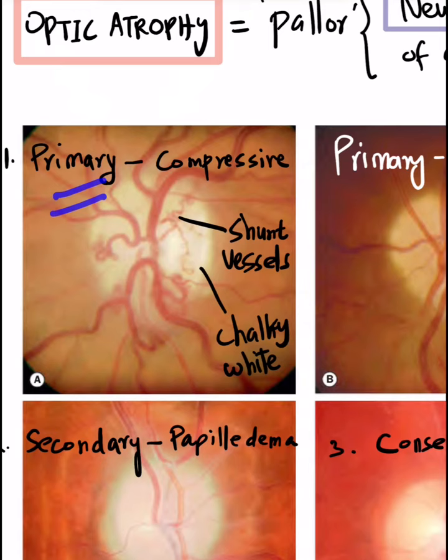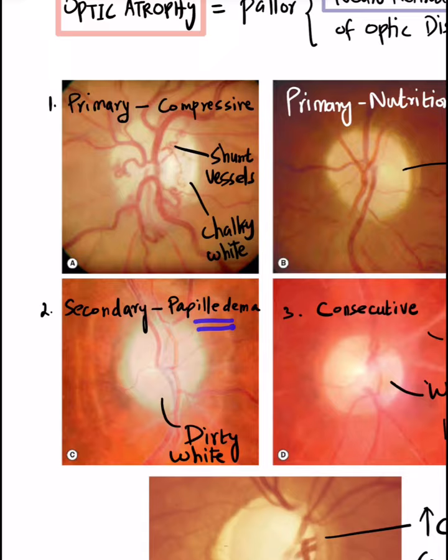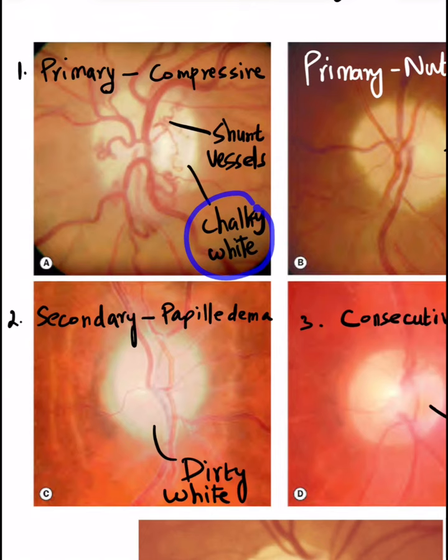Secondary optic atrophy is caused by papilledema. Here you can see the dirty white disc pallor, contrasting with the chalky white disc pallor seen in primary optic atrophy.